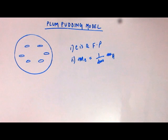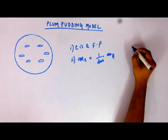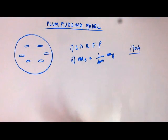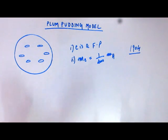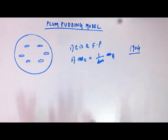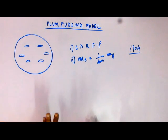J.J. Thomson, after performing his cathode ray tube experiment, started to propose a structure of an atom. The one accepted by many was given in 1904. In his experiment, he knew that certain particles come out of the atom, and that particle was negatively charged. The rest would naturally be positively charged because the atom as a whole is neutral. The idea was that the particle coming out carries inherent negative charge, and the rest of the atom carries inherent positive charge to balance it.